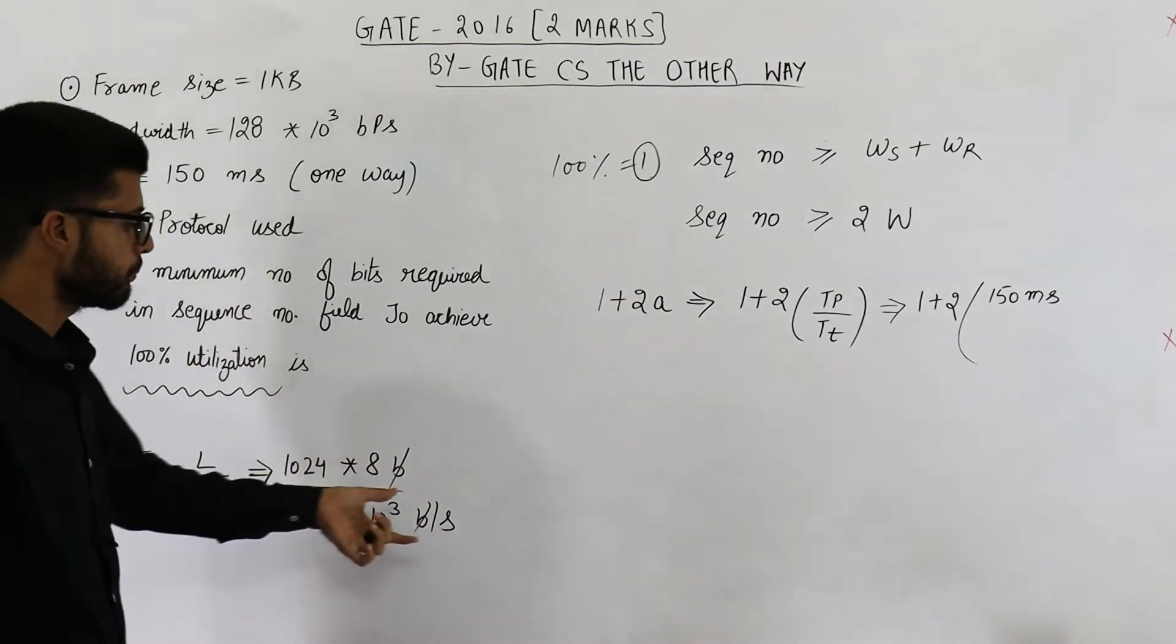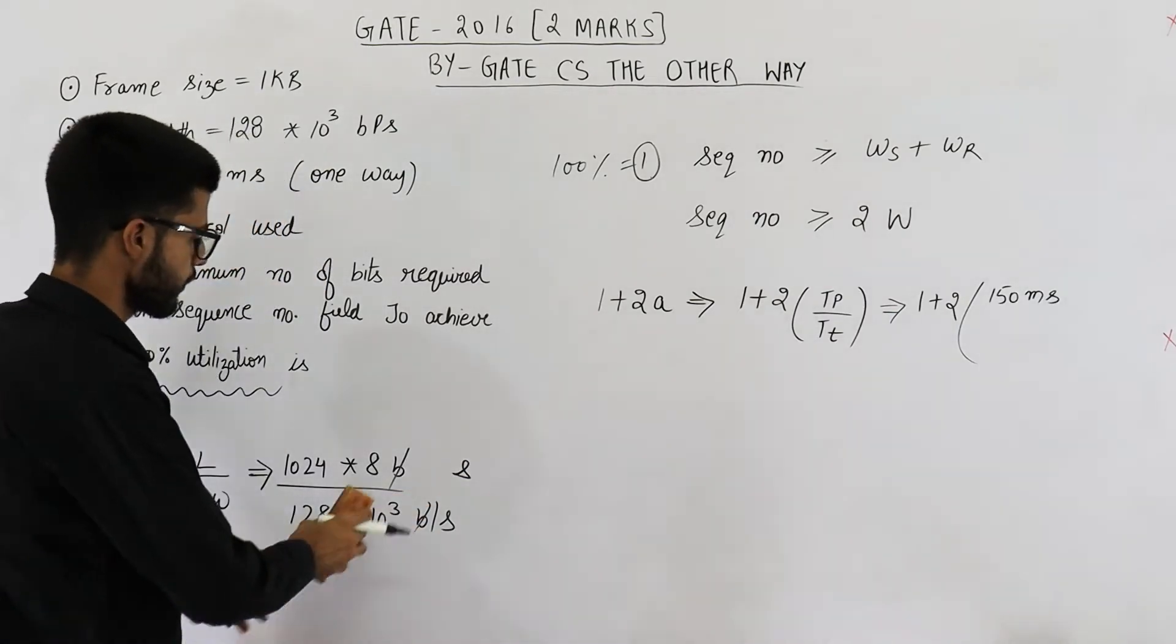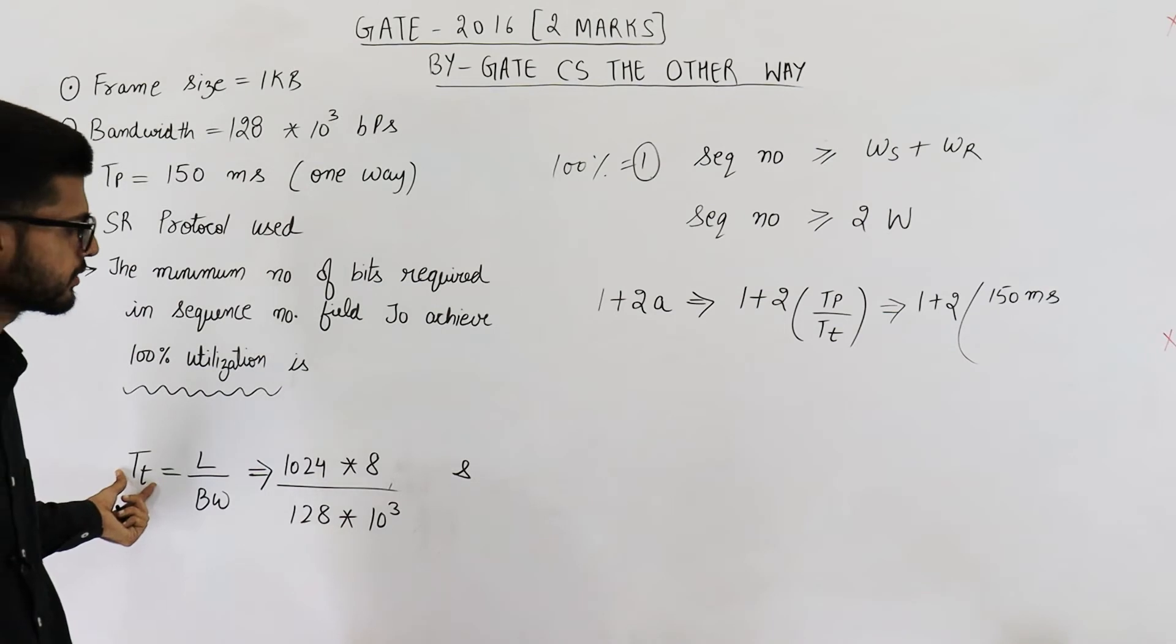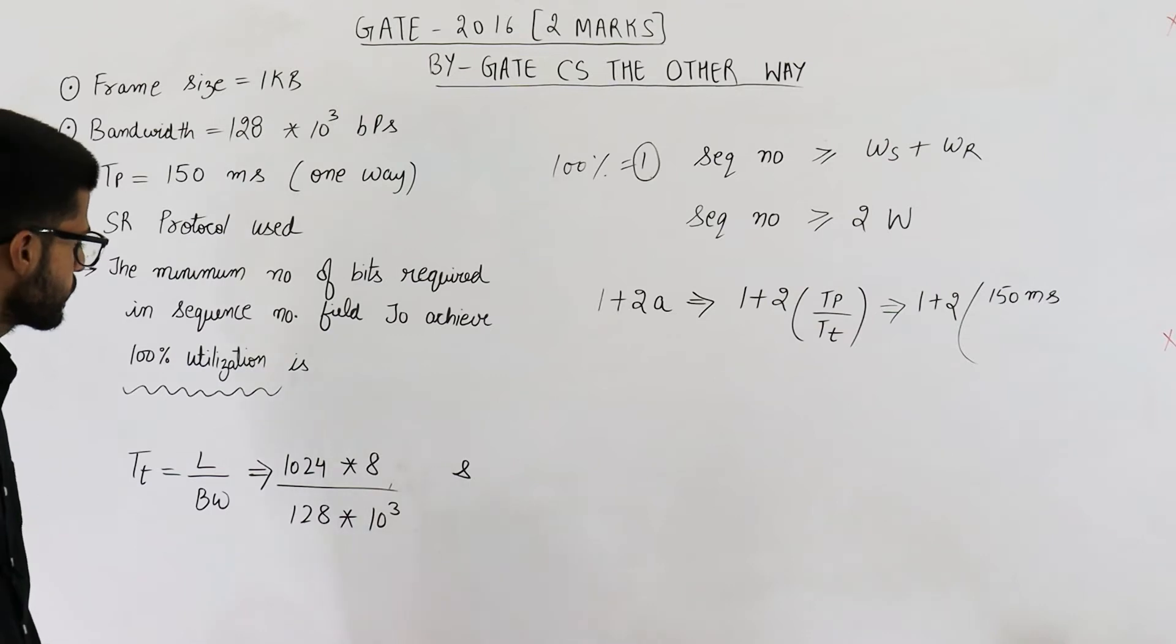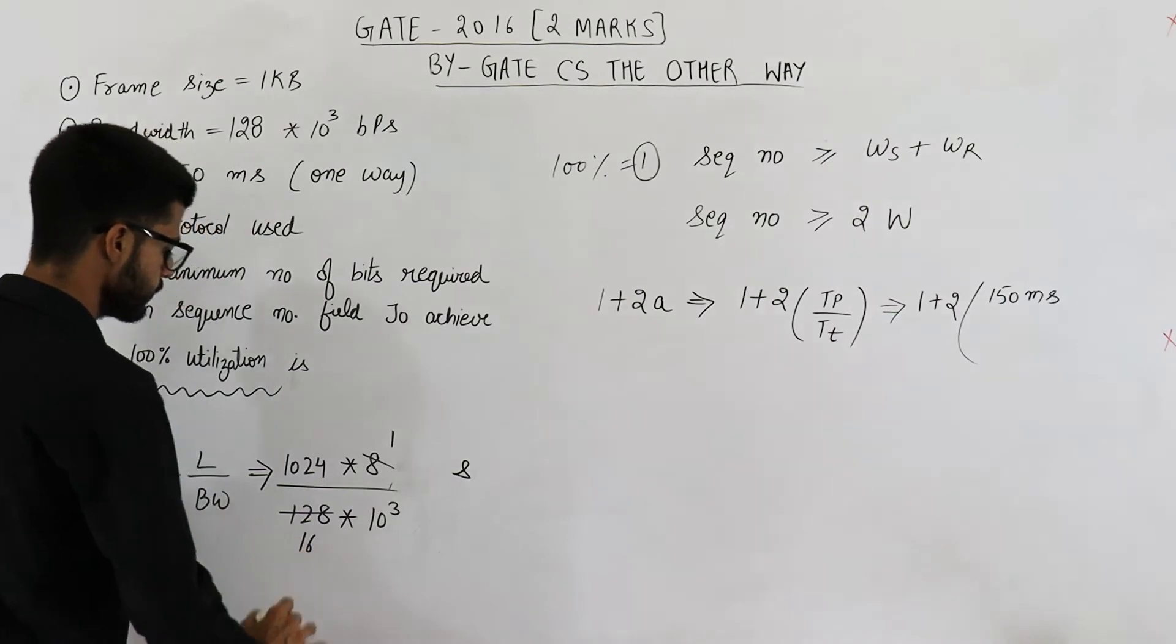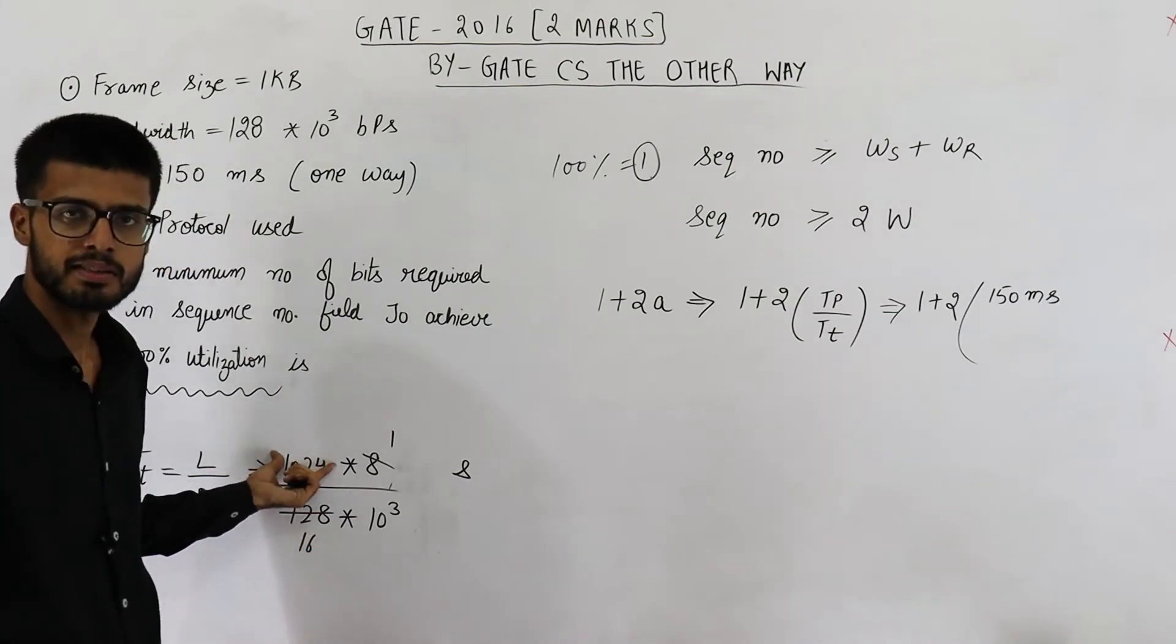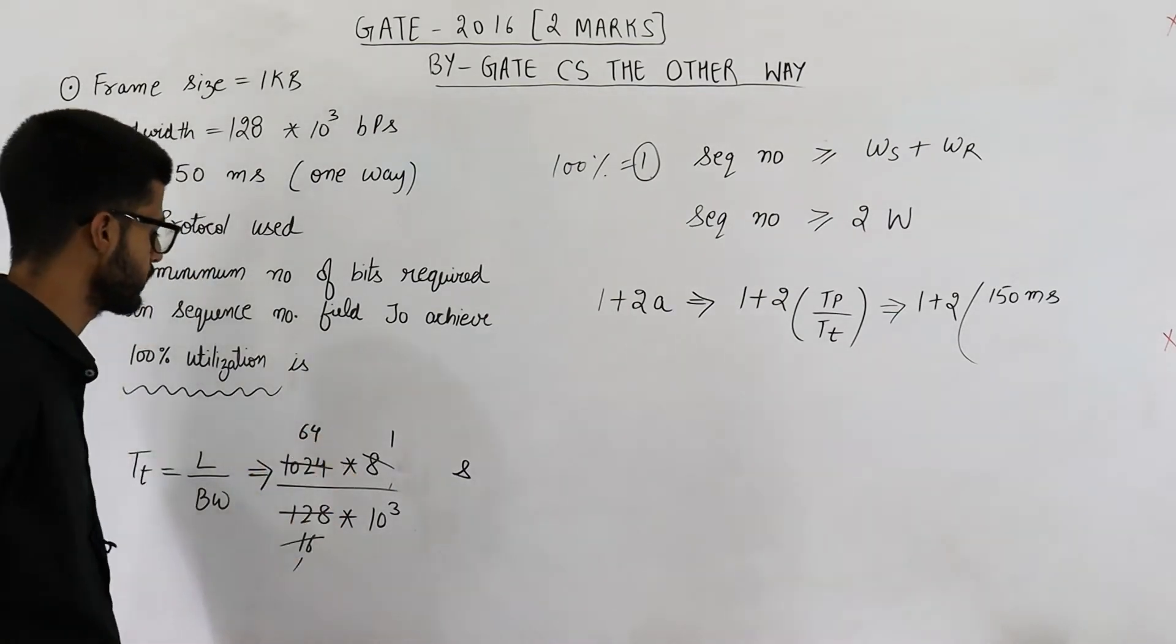Divided by 128 into 10 raised to the power 3 bits per second. Bits and bits will be cancelled. Per second can be simply written as seconds because it is in denominator. So you can see this is value of transmission delay. It is a delay and hence unit needs to be equal to seconds. So units are correct. Now you can see this will be 2 raised to the power 10 divided by 2 raised to the power 4. This will be equal to 2 raised to the power 6, that means 64. Sixteen into 64 will be 1024.